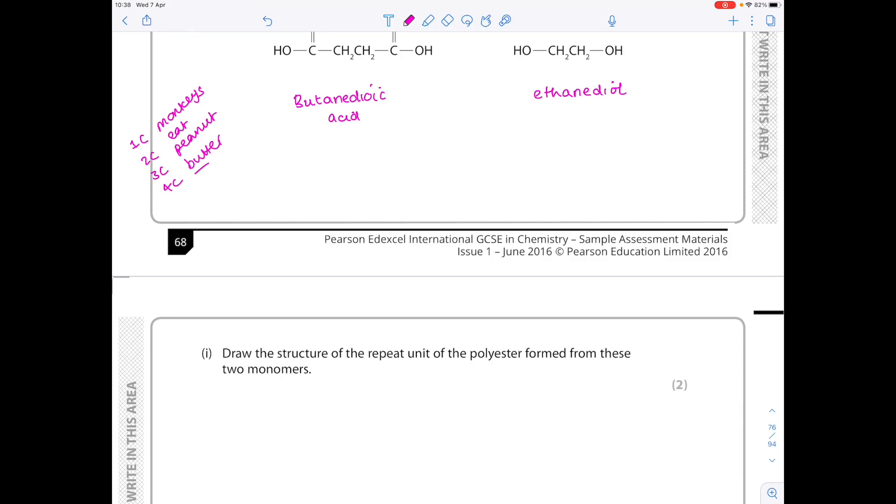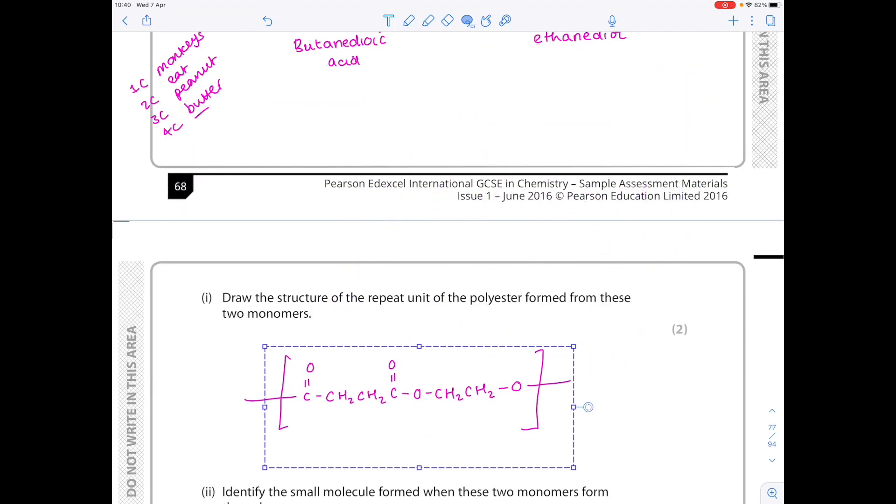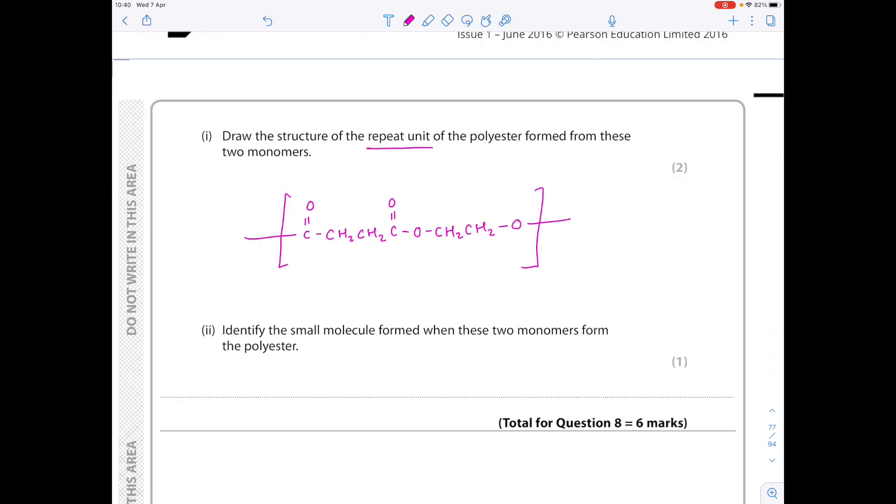Draw the structure of the repeat unit of the polyester formed from these two monomers. So we're going to lose the OH from the carboxylic acid, the H from the alcohol. We need to join them together. We need to lose the OH here and the H here to show the further water molecule being lost. So you can see how I'm actually getting at my answer. I'm going to draw it here. So keeping everything the same, I know I need to lose that water molecule. So I'm joining the dicarboxylic acid directly to that diol. Remember we elongate those bonds and add square brackets. So I've just moved my answer into the space. I've shown the repeat units. I know that it's nice and accurate. Identify the small molecule formed when these two monomers form the polyester. I keep mentioning this is water.